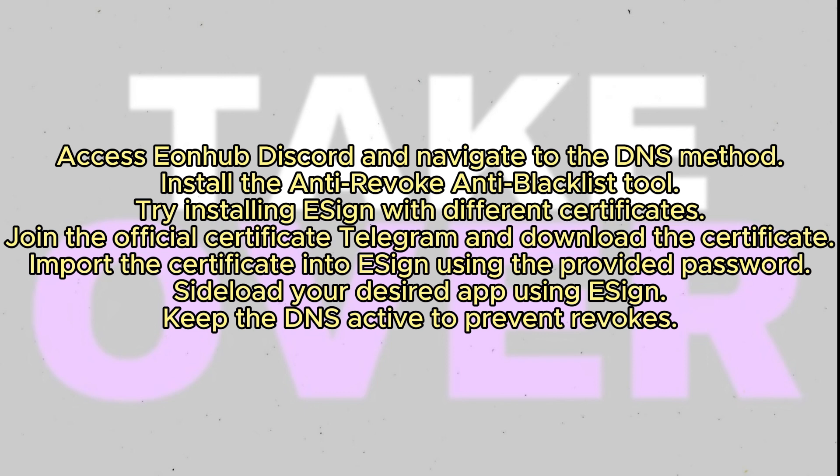Now let's import the certificate used to install eZine. Join the official certificate Telegram, find the certificate you used, and download it as a zip file. Then import the zip file into eZine and enter the password provided in the Telegram. If you're still having issues, refer to the description for further assistance.